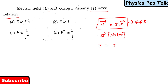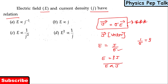E is equal to j divided by σ. Since σ is electrical conductivity, and 1 over electrical conductivity is electrical resistivity ρ, we get E is equal to ρ times j. Therefore, E is directly proportional to the current density j. So option B is the correct answer for this question.